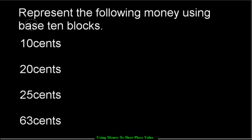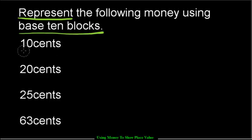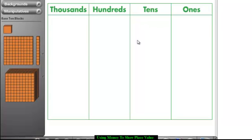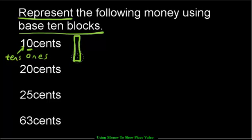Looking at an example — represent the following money using base 10 blocks. If I had $0.10 over here, I have to show what it looks like in base 10 blocks. You could underline each place value and show the corresponding amount of blocks. In this case, you would have zero ones, and we need one ten. So all I'd need to draw is just one of the long skinny ones, and zero ones. This would be 10 cents. Remember, 10 cents was in the tens — they match up!